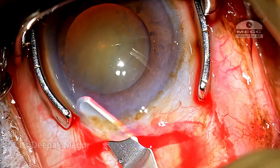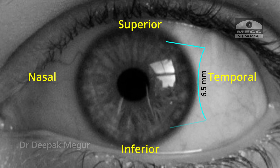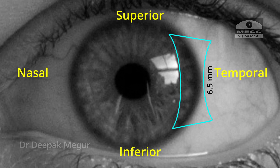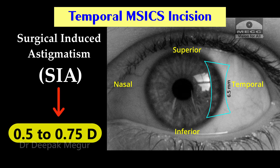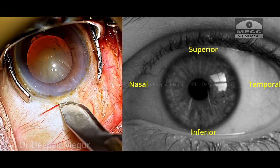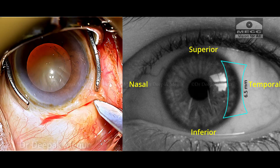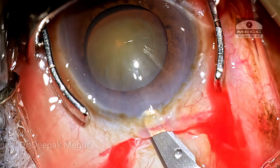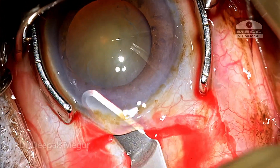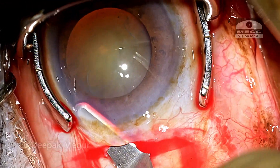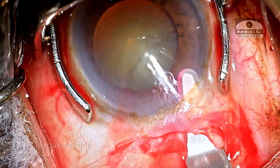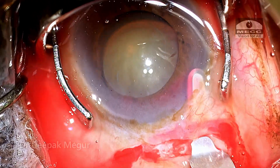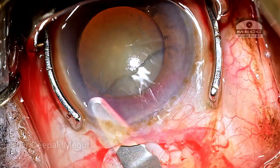This case demonstrates that a well-constructed temporal sclerocorneal tunnel for manual SICS induces very little astigmatism. In my experience, it has been about 0.5 to 0.75 diopters and never above 0.75. So the temporal sclerocorneal tunnel might not be a very effective tool to correct high degrees of against-the-rule astigmatism, but it definitely has a great role to play in most routine cases, ensuring very predictable refractive outcomes with surgically induced astigmatism almost comparable with that of phacoemulsification.